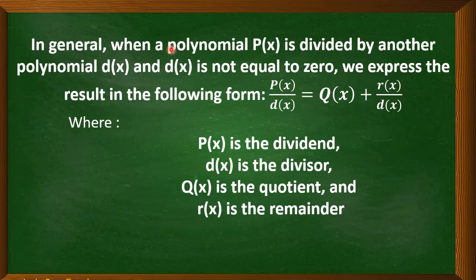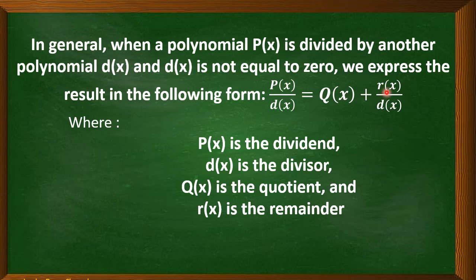In general, when a polynomial p(x) is divided by another polynomial d(x) and d(x) is not equal to 0, we express the result in the following form: p(x) divided by d(x) is equal to q(x) plus r(x) over d(x). Where p(x) is the dividend, d(x) is the divisor, q(x) is the quotient, and r(x) is the remainder.